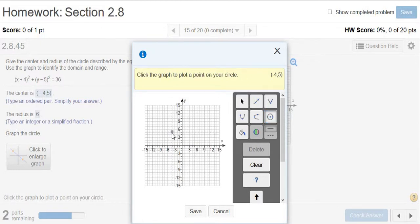Then it says click the graph to plot a point on your circle. So look what happens when I move my mouse. Whoa. It gets big and small. So from the center, we have to travel a distance of 6 in any direction. So it's probably easiest to go up, down, left, or right by 6.